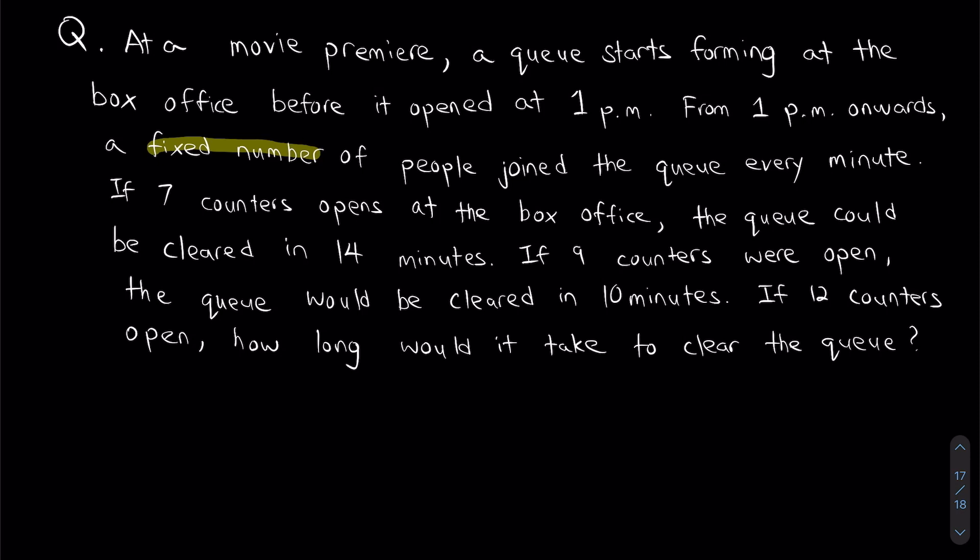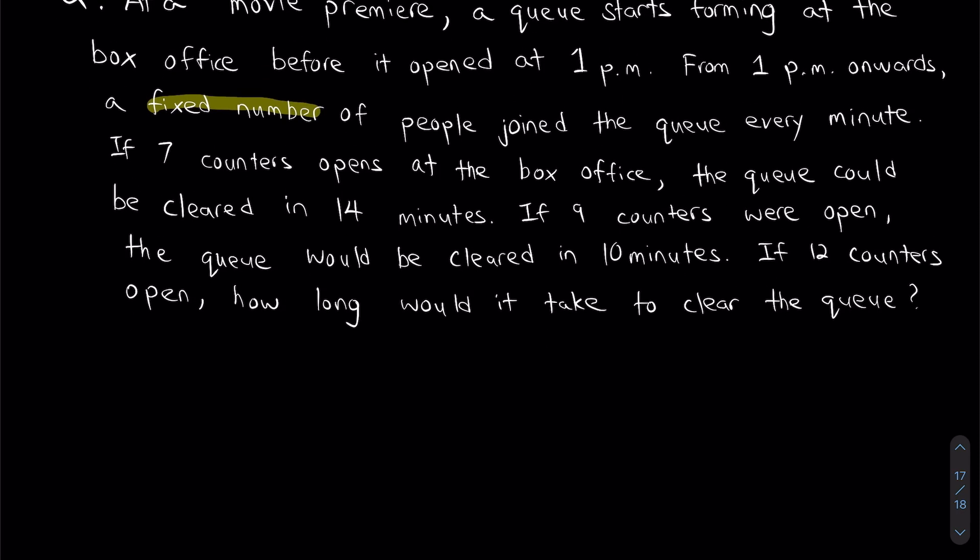So there's quite a lot of information in this question, but I want us to think about this. What are all the unknown information that we have in this question? And I'm going to start listing them down one by one. So the first thing we don't know is how many people already in the queue before the start. That's the first unknown information. And I'm going to call this unknown C.